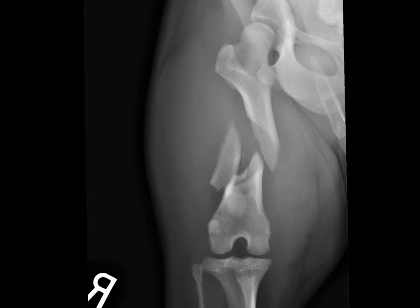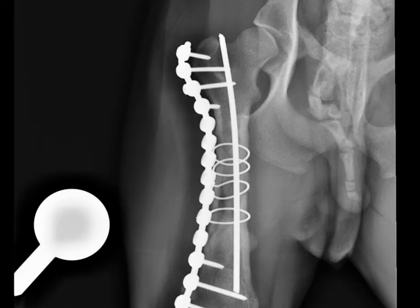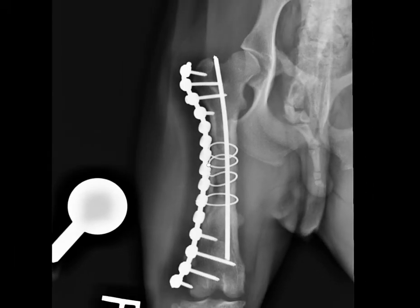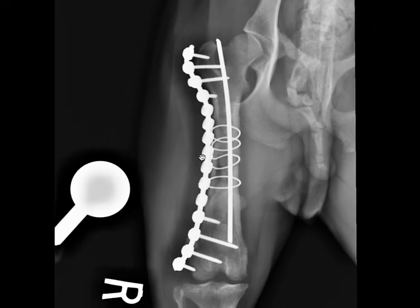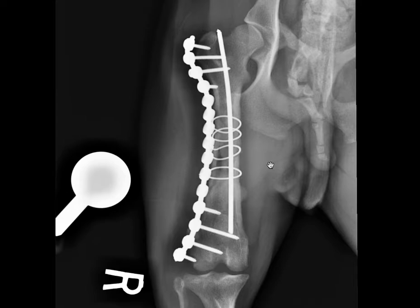Let me show you how this one came together. You can see there were quite a lot of implants required here, including an intramedullary pin, a laterally applied plate, multiple screws, and cerclage wires.